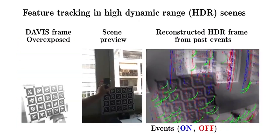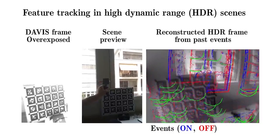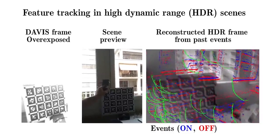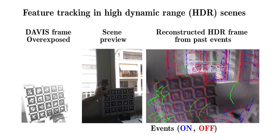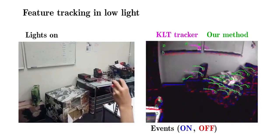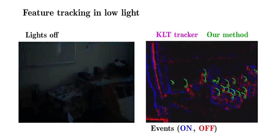Thanks to the high dynamic range of the events, our method is able to track features in challenging illumination conditions and even in changing and low light conditions such as when the light is turned off and on again.